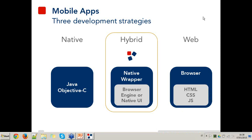Developing a native mobile application means learning different languages and losing time adapting to how different platforms work. Also, from a development effort perspective, you have to create different apps for different platforms — if you want to target Android, iOS, and Windows Phone, you must develop three different apps, one for each operating system.